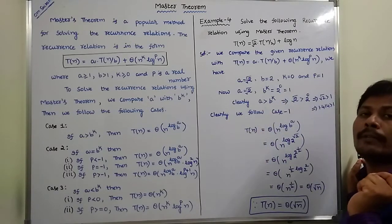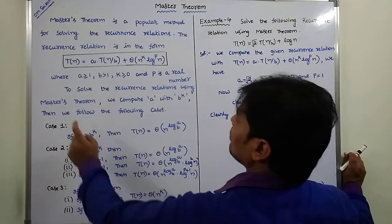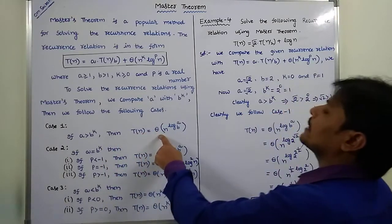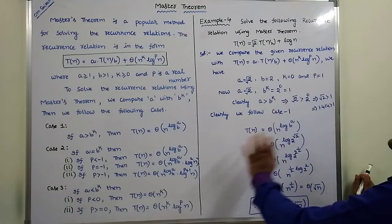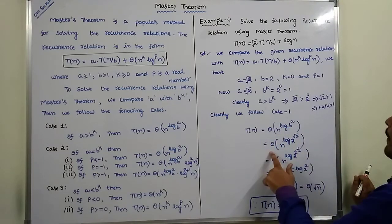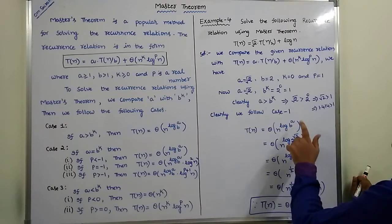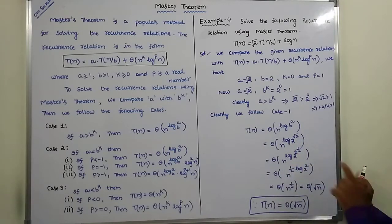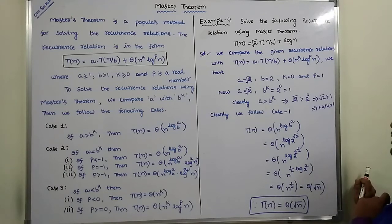Since a > b^k, this satisfies Case 1. In Case 1, if a > b^k, then T(n) = Θ(n^(log_b(a))). Substituting, b = 2 and a = √2. Since √2 = 2^(1/2), we get Θ(n^(log_2(2^(1/2)))). The exponent 1/2 comes before the log, giving us n^(1/2) · log_2(2).